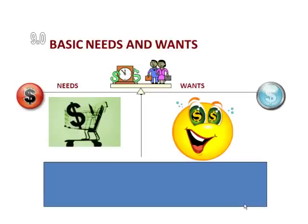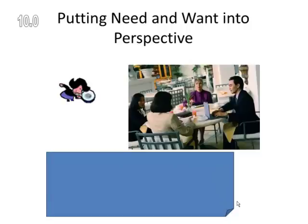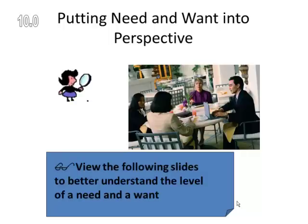So you have a scale here, and the scale is you balance between your needs and wants. You use a basic economic concept — it's also a basic problem-solving technique — when you make decisions on buying and purchasing things that are desirable for yourself, your business, or the environment that you live in. Let's look at some slides that will help put a need and want into perspective.